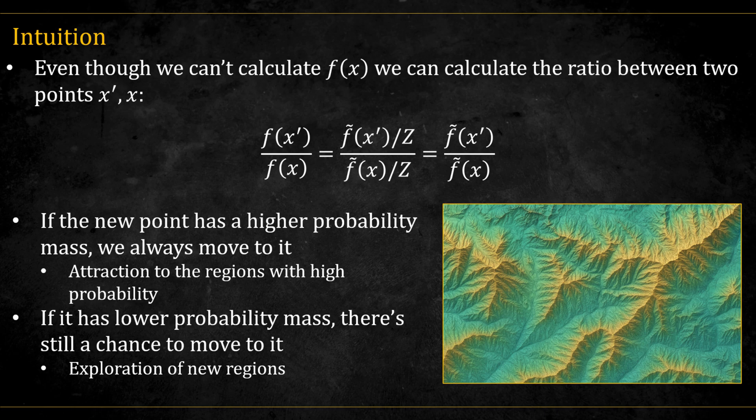The main insight is that even though we don't have access to the normalizing constant, when we calculate the ratios between two points, the normalizing constants cancel out. And so we don't need the full normalized distribution. Also, what the algorithm does is that when suggesting a point with higher probability, we always move to it, so we are attracted to regions of higher probability. But there is still a chance of exploring other regions when a point with lower probability is suggested, and the chance to accept it is proportional to the above ratio.